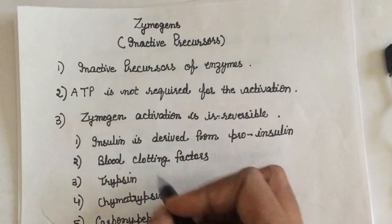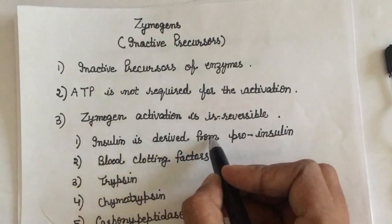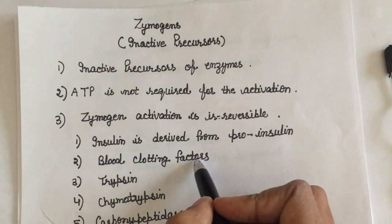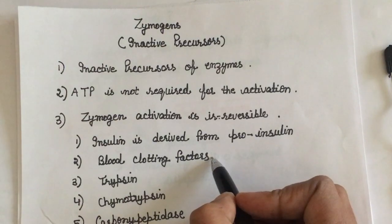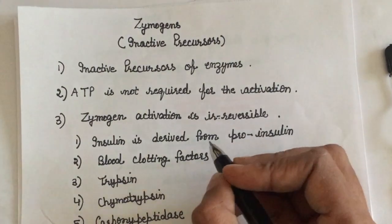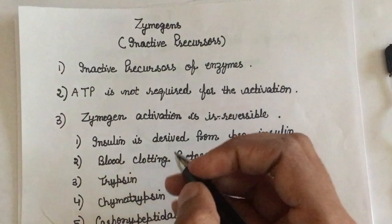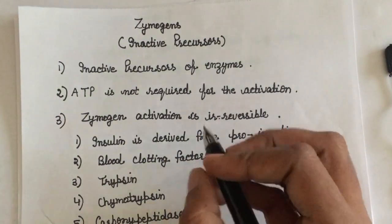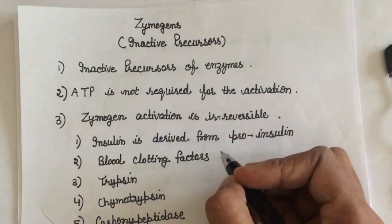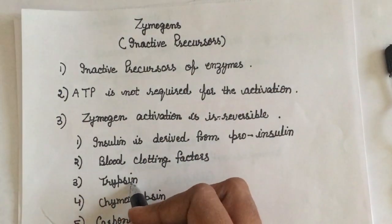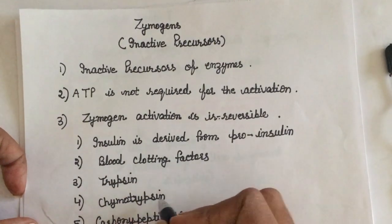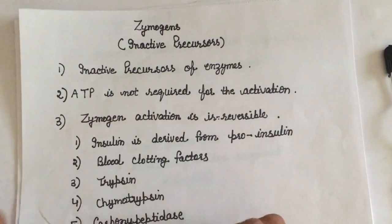Some examples of zymogen activation include blood clotting factors and insulin. Insulin is derived from proinsulin — proinsulin is basically the zymogen of insulin. In blood clotting, the first initiator factor gets activated and converts another zymogen into its active form, and the cascade continues. Similarly, trypsin is initially synthesized as trypsinogen, chymotrypsin as chymotrypsinogen, and carboxypeptidase as procarboxypeptidase.